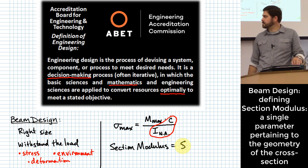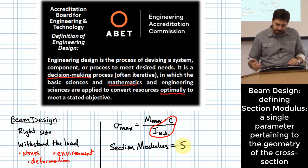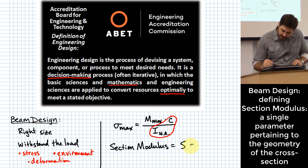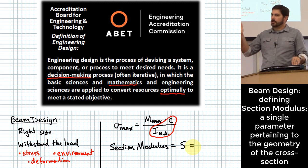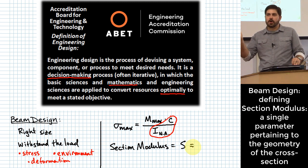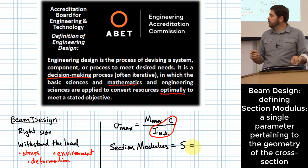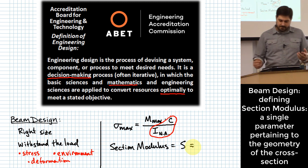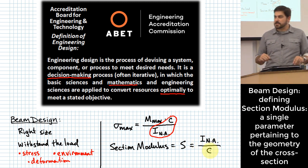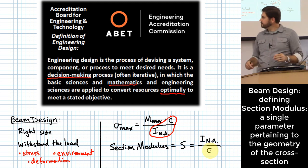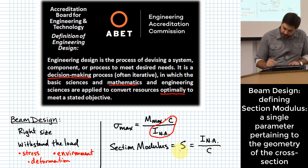Capital S is the symbol our text uses for section modulus. We want to define it so that as S gets larger, we're talking about stronger and stronger beams. Section modulus is defined as S = I/c — the second moment of area about the neutral axis divided by the maximum distance from the neutral axis to the outer fibers.